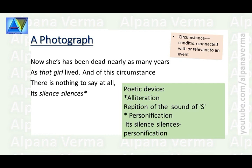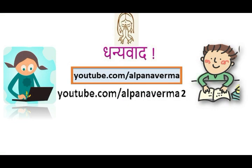The poetic devices in the final lines are: alliteration in 'silence silences' with the repetition of the 'S' sound, and personification in 'its silence silences' — the circumstance or situation, a non-living thing, is given the human quality of silence. This was the line-wise explanation of the poem, presented by Alpna Varma. I hope you understood it very well. Thank you.